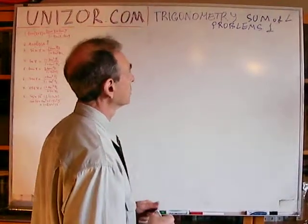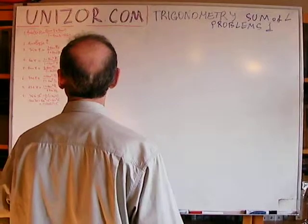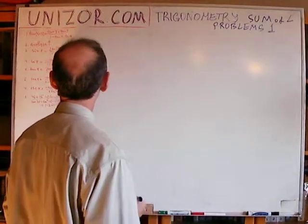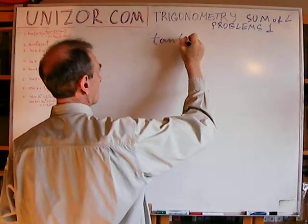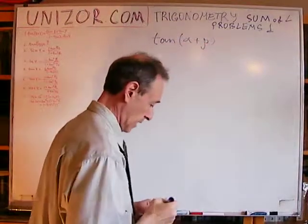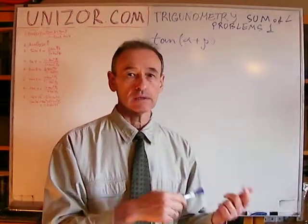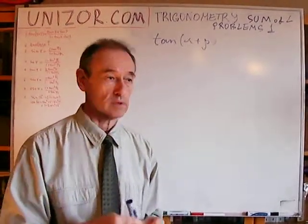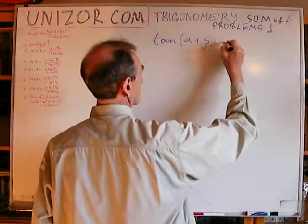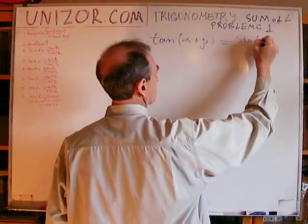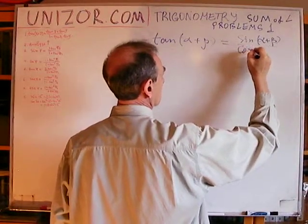We are talking about problems on sum of angles, and the first one is: I would like to derive the formula for tangent of the sum of two angles. I assume that the previous lectures related to sine and cosine of the sum of two angles are clear, and I will use those results. The obvious beginning is the definition of tangent as sine over cosine.